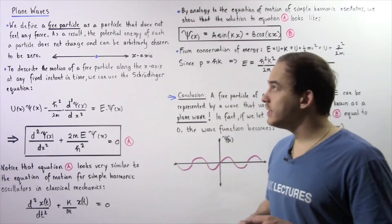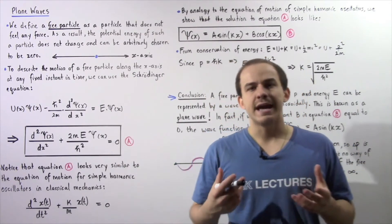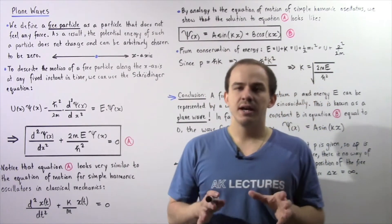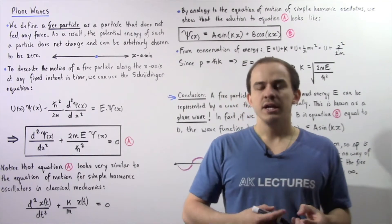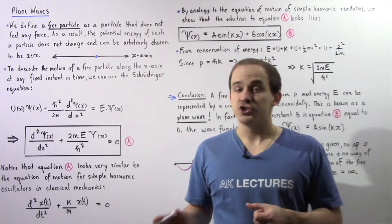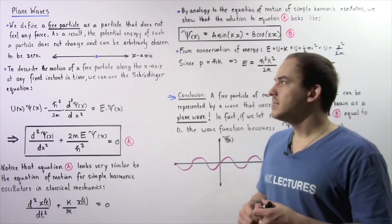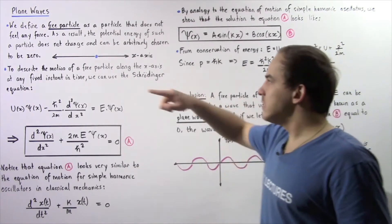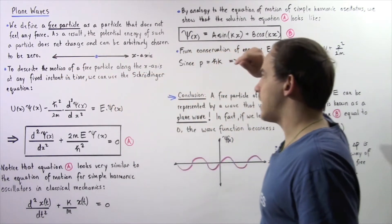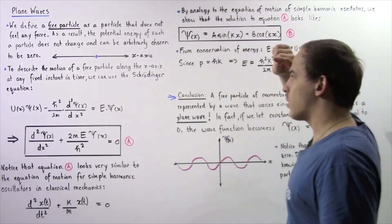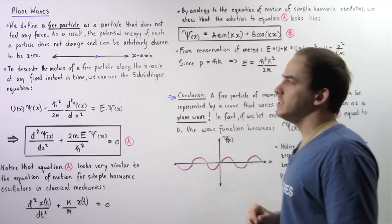In quantum mechanics, we define a free particle as a particle that does not feel any outside force. Because it doesn't feel any force, the potential energy of our free particle does not actually change, and so we can arbitrarily choose the potential energy of a free particle to equal zero. Let's suppose we have a free particle — an electron moving along the x-axis in the positive direction — so the potential energy of the electron is arbitrarily chosen to be zero.